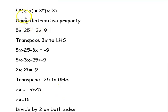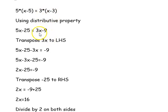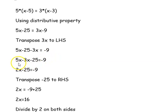Using the distributive property: 5 times x minus 5 times 5 gives 5x minus 25, and 3 times x minus 3 times 3 gives 3x minus 9. Transposing 3x to the left hand side, we get 5x minus 25 minus 3x equal to minus 9. Rearranging gives 5x minus 3x minus 25 equal to minus 9.